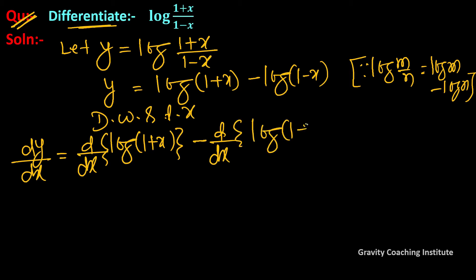So equal to, we'll use chain rule. First the differentiation of log will be 1/(1+x) and derivative of (1+x) will be 1. Minus, for log(1-x) it will be 1/(1-x) and derivative of (1-x) will be minus 1.